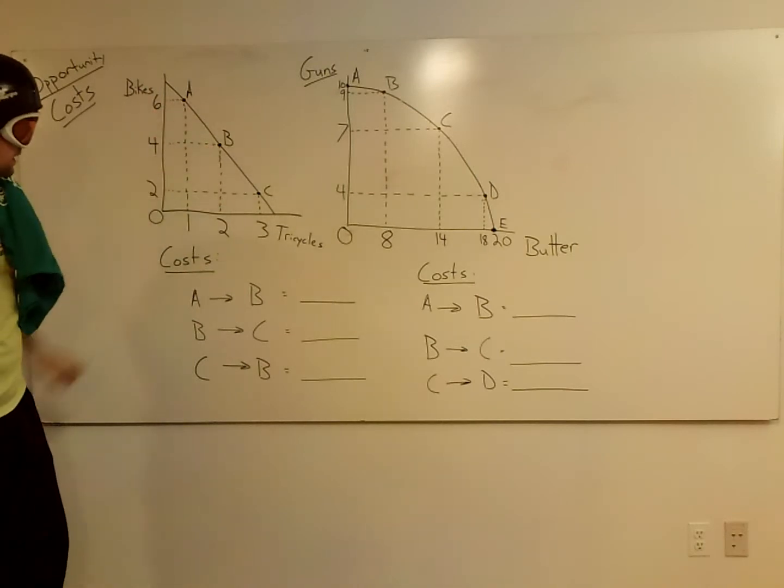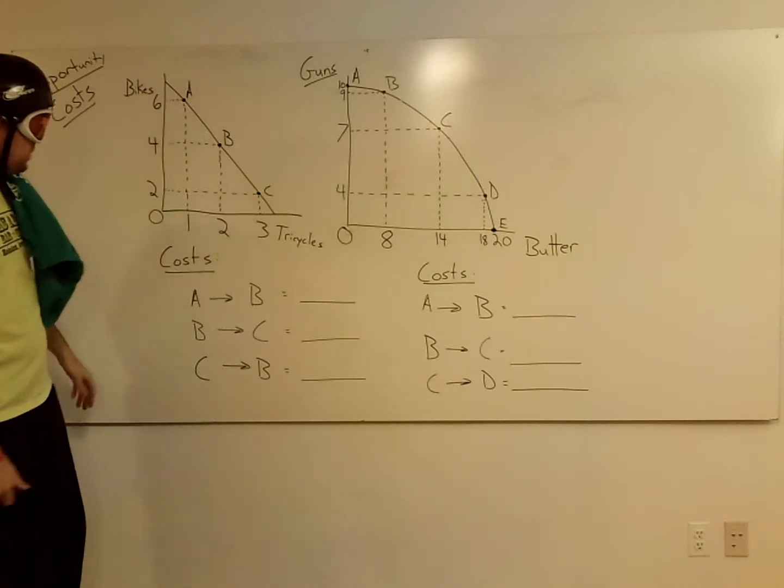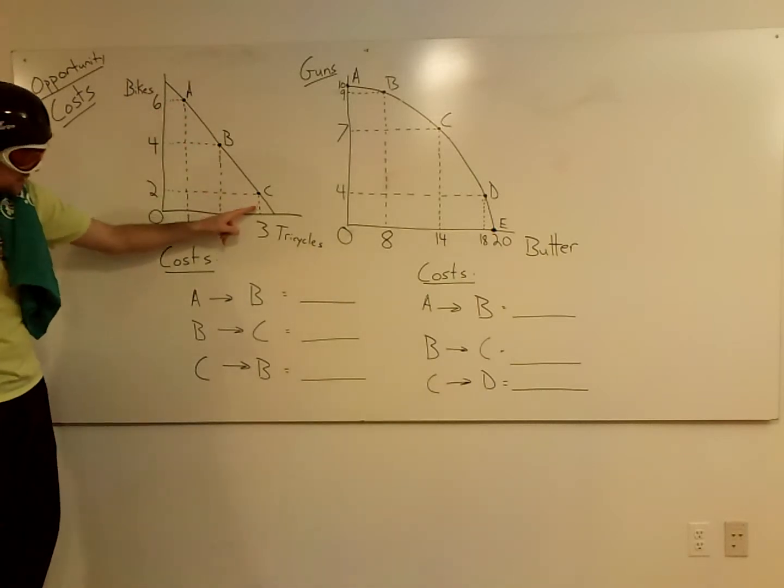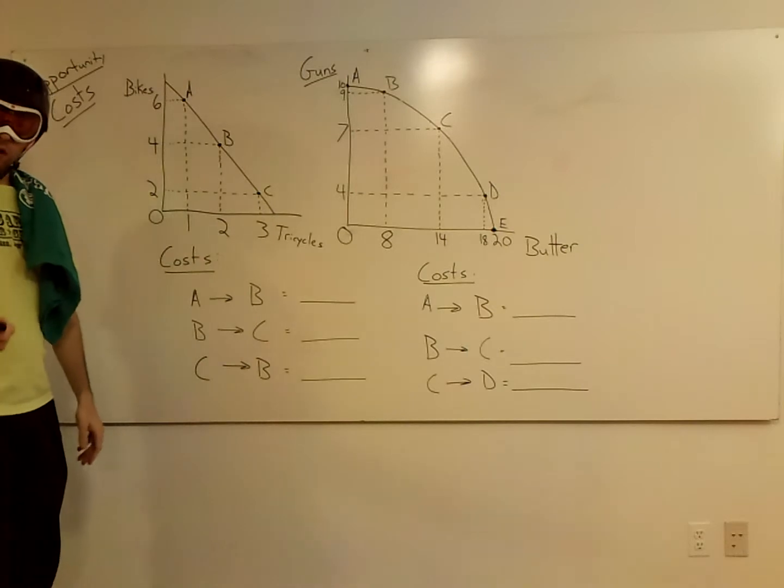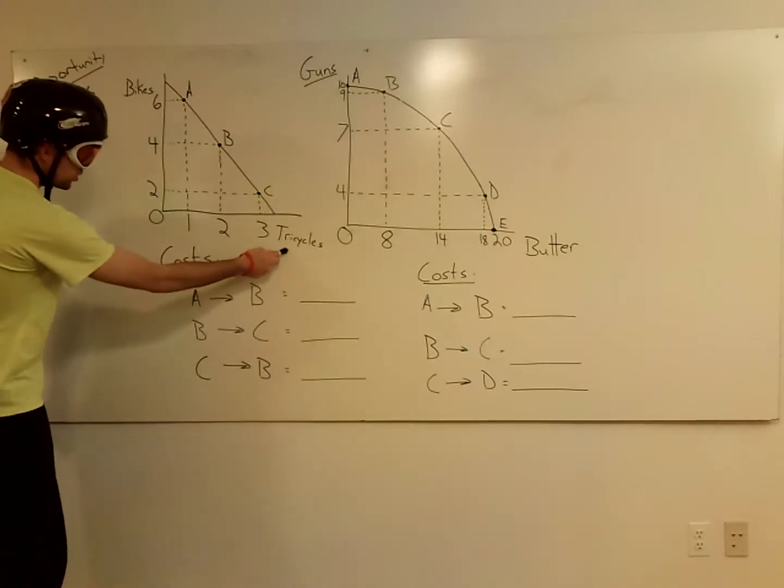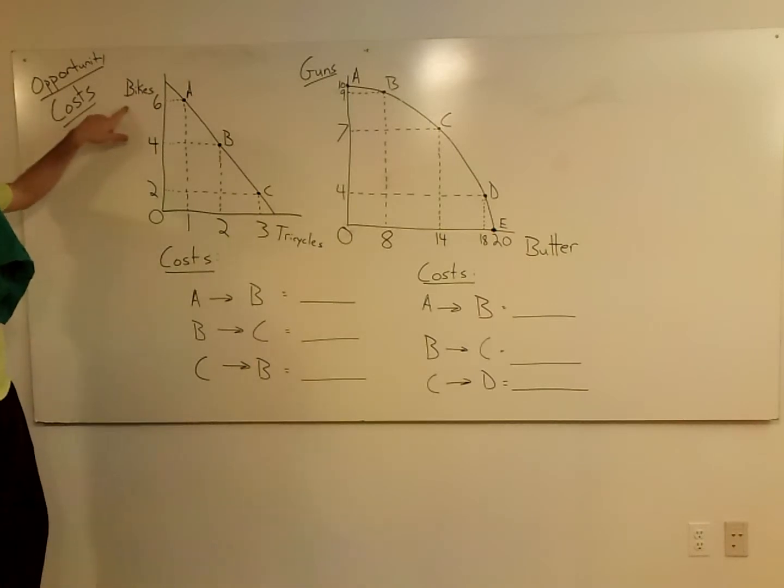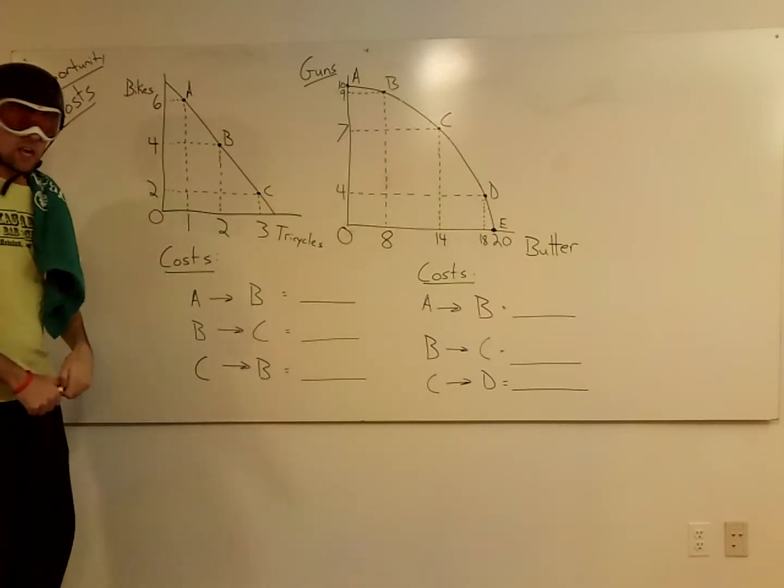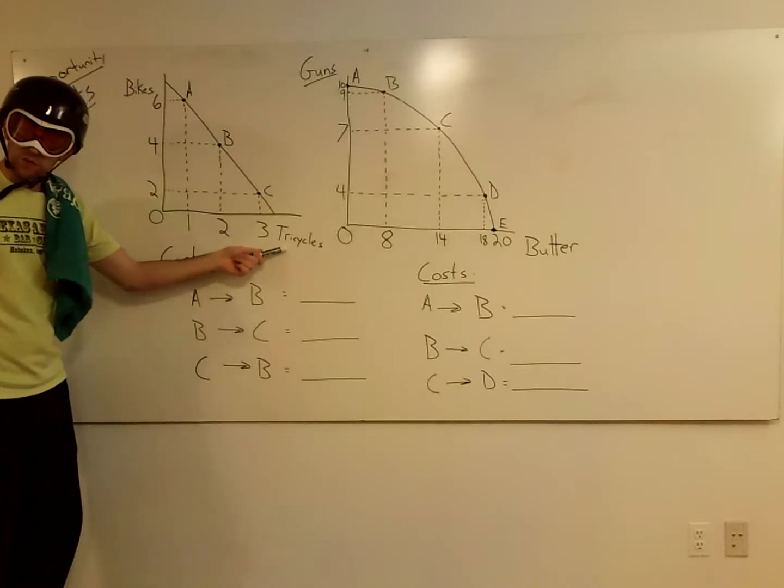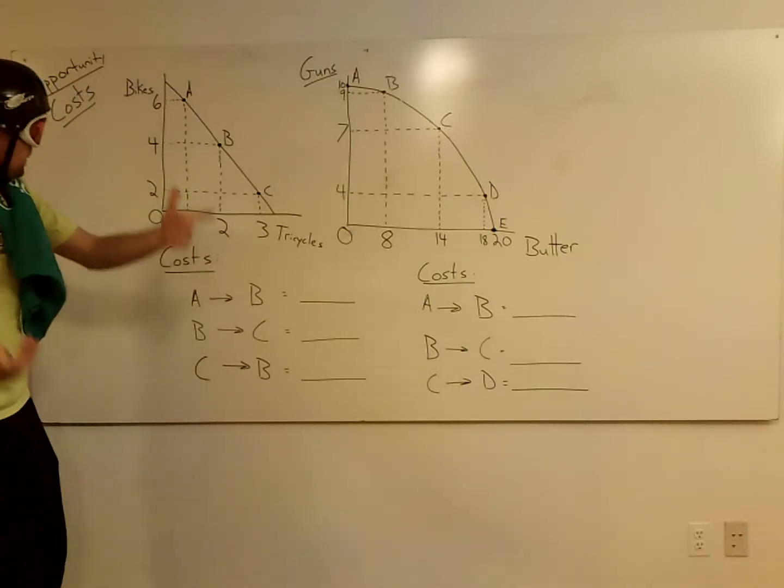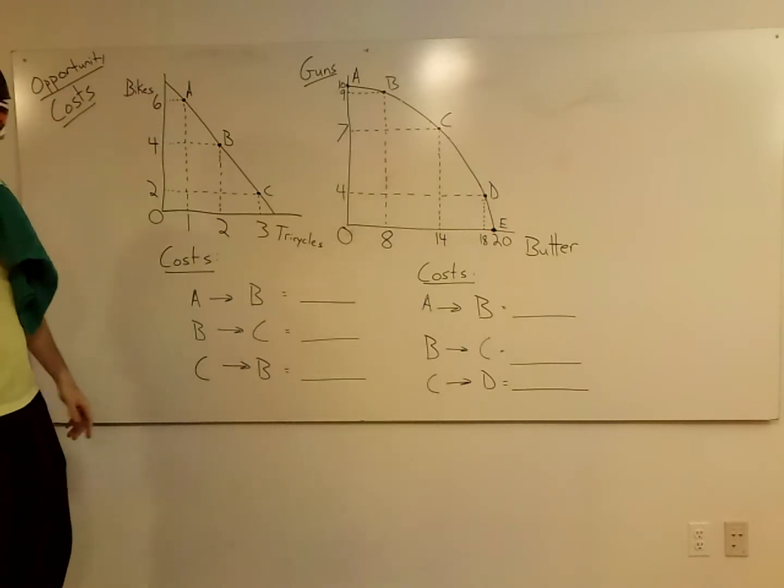So if you look just look at this guy here, I've got points A, B, and C. All points are efficient, they're on our production possibilities curve. But notice if we go from A to B to C we're making more tricycles and making less bicycles. So the simplest way to look at it is if you choose to make more tricycles your opportunity cost has to be in terms of bicycles.